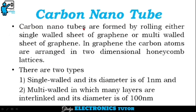Carbon nanotubes are formed by rolling either a single wall sheet of graphene or a multi-wall sheet of graphene. In graphene, the carbon atoms are arranged in two-dimensional honeycomb lattices. Based on this, there are two types: single-walled, with a diameter of one nanometer, and multi-walled, in which many layers are interlinked, with a diameter of one hundred nanometers.